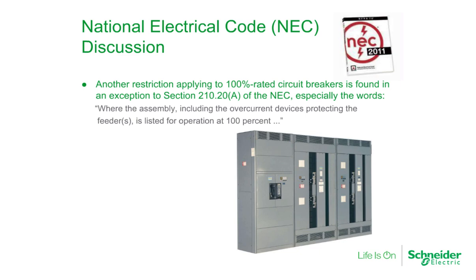Another restriction applying to 100% rated circuit breakers can be found in the National Electrical Code. The code states where the assembly, including the overcurrent devices protecting the feeders, is listed for operation at 100%. This says it is not just the circuit breaker that must be 100% rated — rather, the entire installation must be suitable for 100% operation.